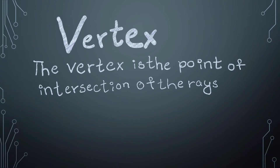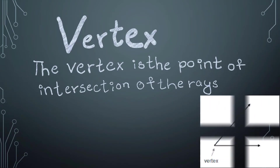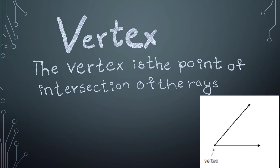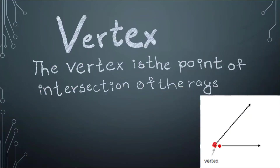Vertex. The vertex is the point of intersection of the rays. See, this circle over here is known as the vertex. When the two rays meet together, the common endpoint that they share is known as the vertex.